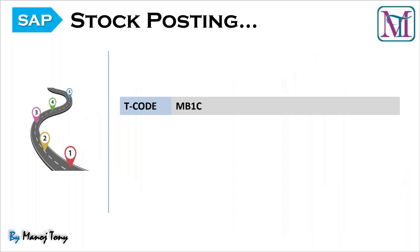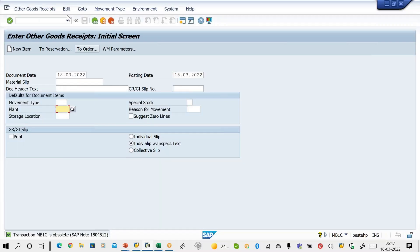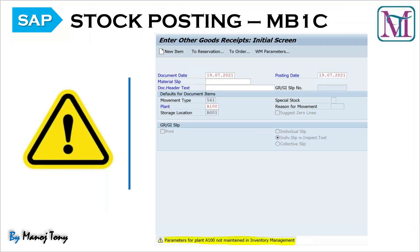How to do the stock posting? We are having multiple ways — either you can use this transaction code or you can do the stock posting through MIGO. Now I'll go to the SAP system and use transaction code MB1C. When you do MB1C, you will get the initial screen. We have to give movement type as 561, then your plant code, then storage location. My plant code is ZA01 and storage location is also ZA01.